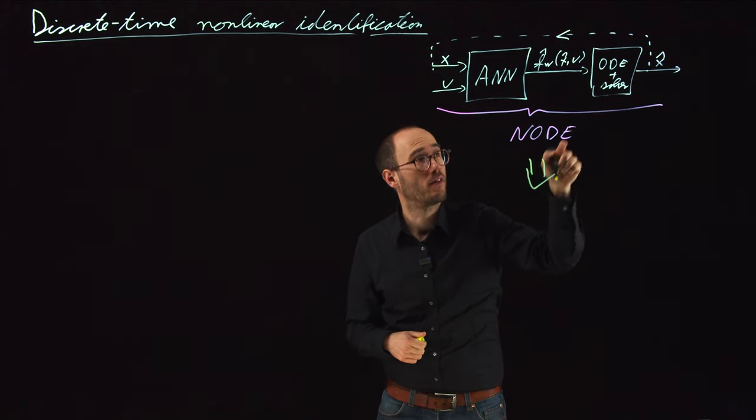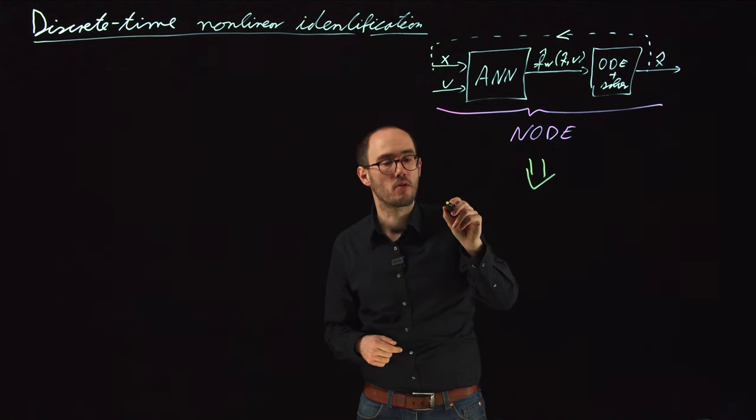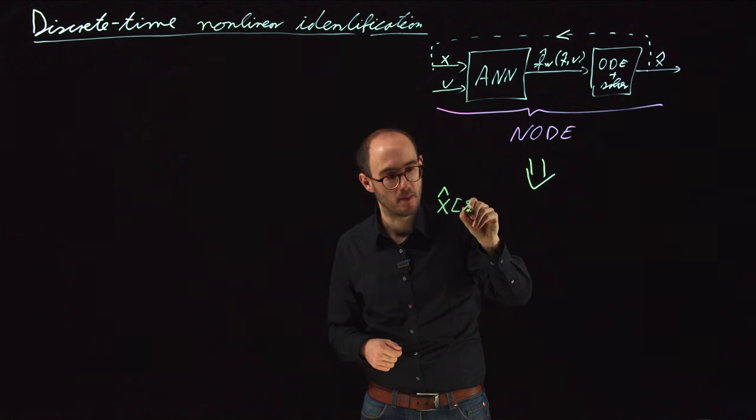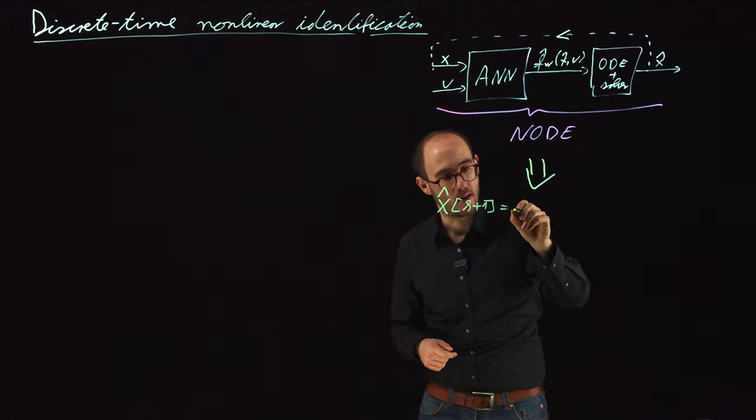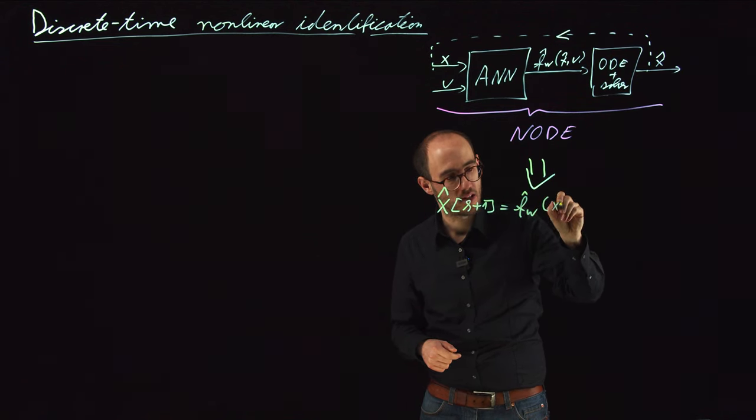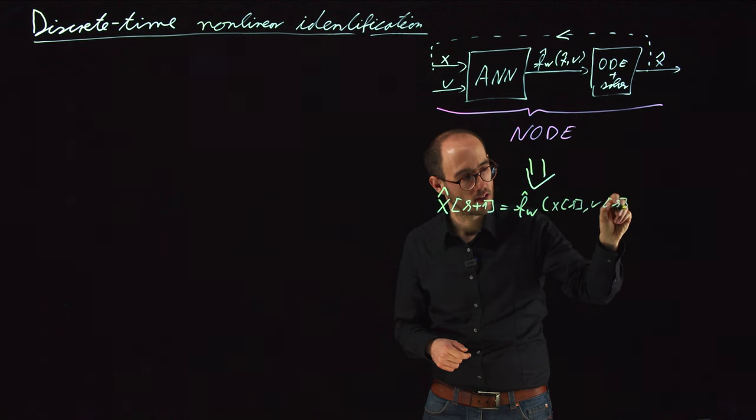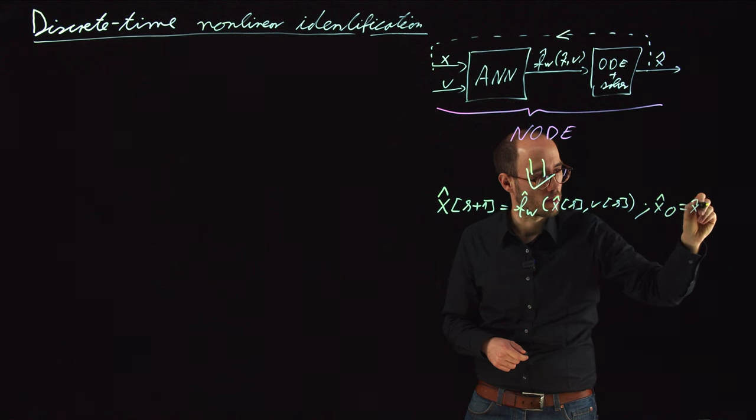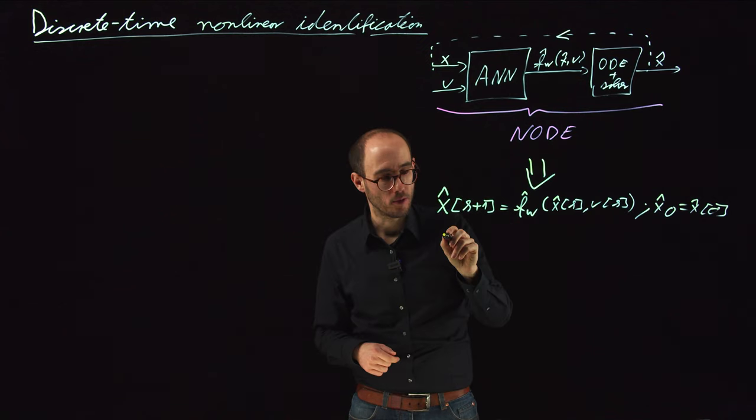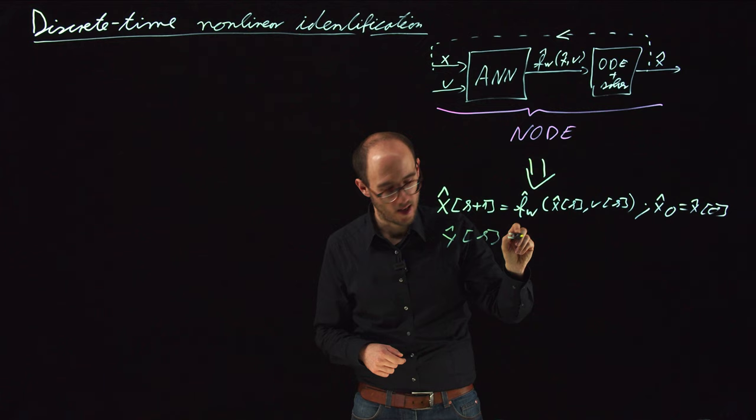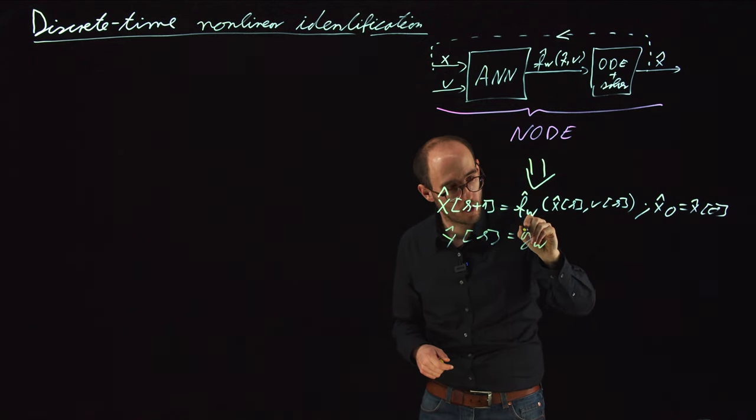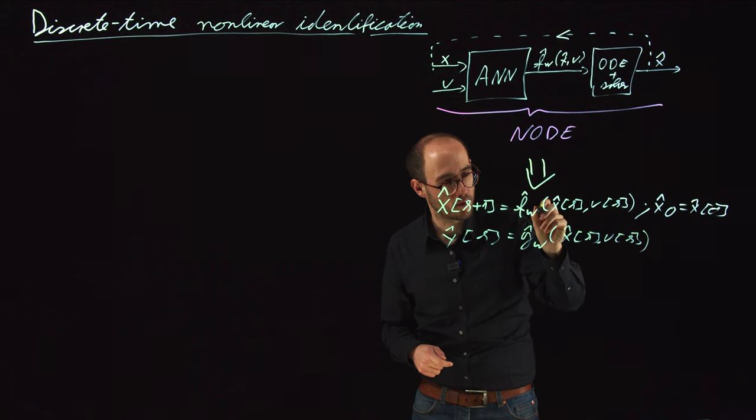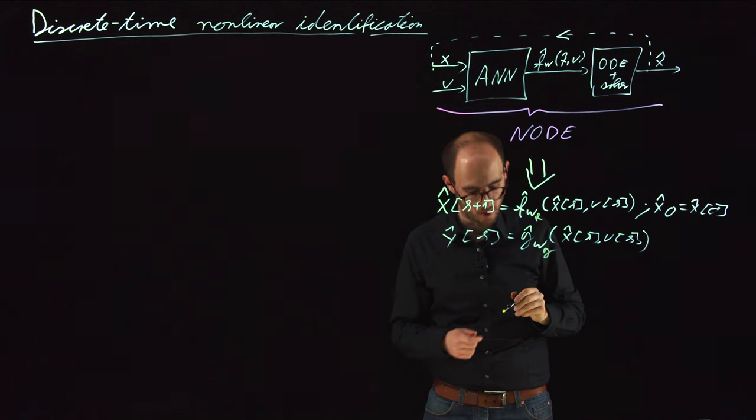So what we do instead of evaluating and describing the model in continuous time using an ODE, we represent it directly as a state space difference equation. So x hat at time step k plus 1 is equal to some f_w hat at time step x_k and u_k. That's x hat, by the way, giving some initial condition x0 hat being x0 at the initial time step. And as an output equation, y hat of k is equal to g_w hat at x hat of k and u of k. So that might be here also different parameters, so w_f and w_g for the state and for the output equation.